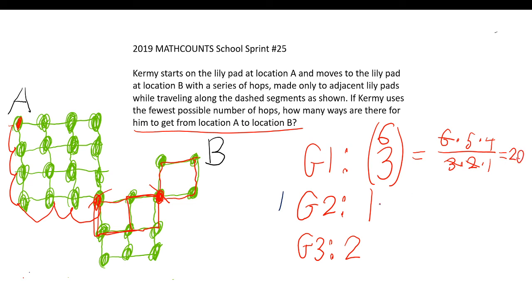Now our total ways will just be 20 multiplied by one multiplied by two. Since all the 20 ways here, there's one more way here that can be paired with this, and then for every way here, there's two more ways that can be paired with that way. So this is 20 multiplied by one multiplied by two. 20 multiplied by one is 20, 20 multiplied by two is 40. And so our answer is 40 ways to get from point A to point B.